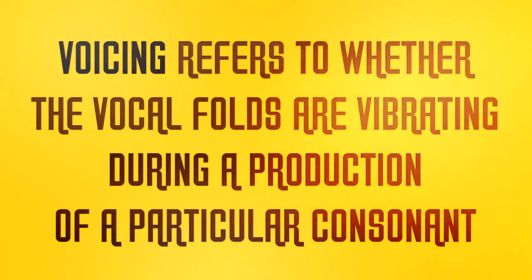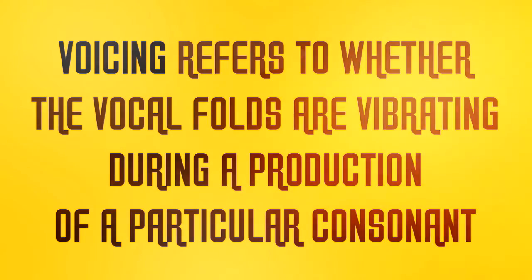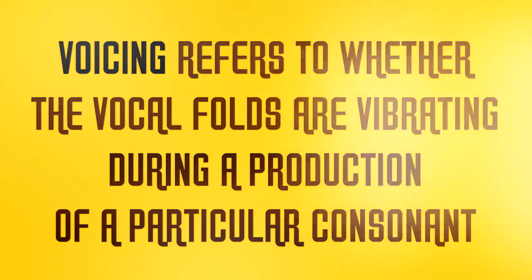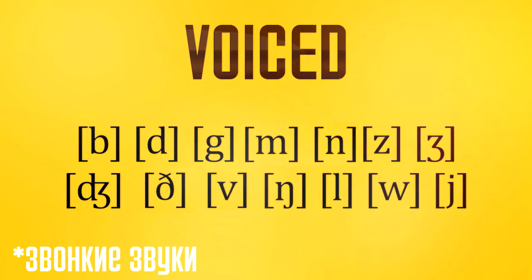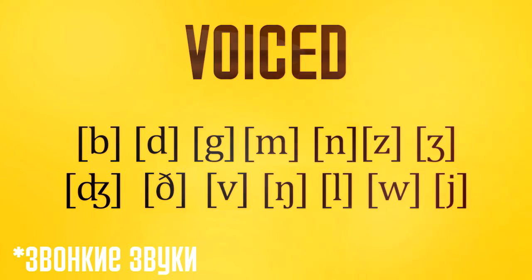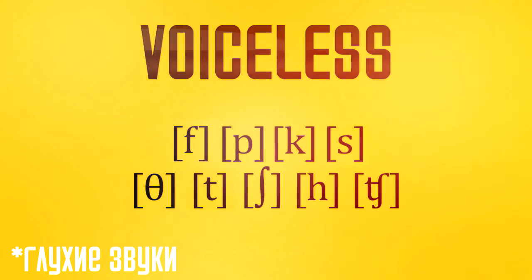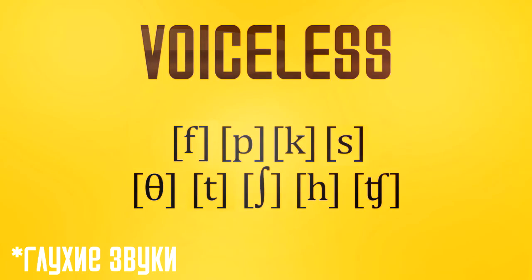Voicing refers to how closely the vocal cords are placed together. In English there are only two possibilities: voiced and voiceless. A voiced sound is produced with the vibration of the adducted vocal folds in the larynx, as in B, D, G, M, N, etc. Voiceless sounds are consonants produced without vibration of the vocal folds, as in F, P, K, S, etc.